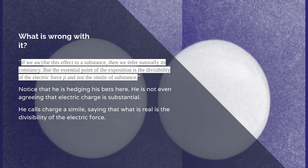But let's look at Marx's arguments in a little more detail and see why they are nonsense. Let's look at the first one when he's talking about Coulomb. If we ascribe this effect to a substance then we infer naturally its constancy. But the essential point of the exposition is the divisibility of the electric force and not the simile of substance. You've got to notice he's hedging his bets here. He's not even agreeing that the electric charge is something substantial. He says that's just a simile because he thinks all scientific theories are just symbols by which we organise our sense impressions.